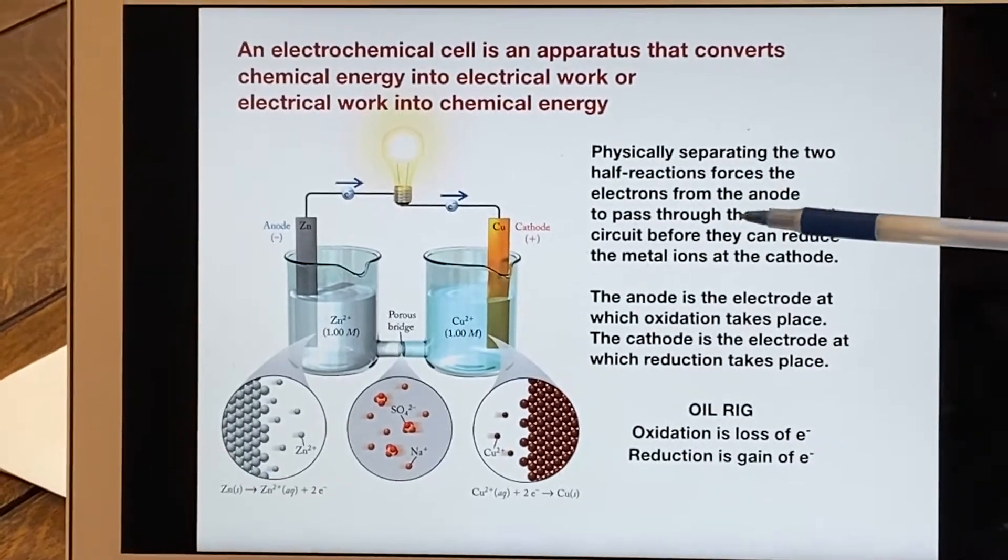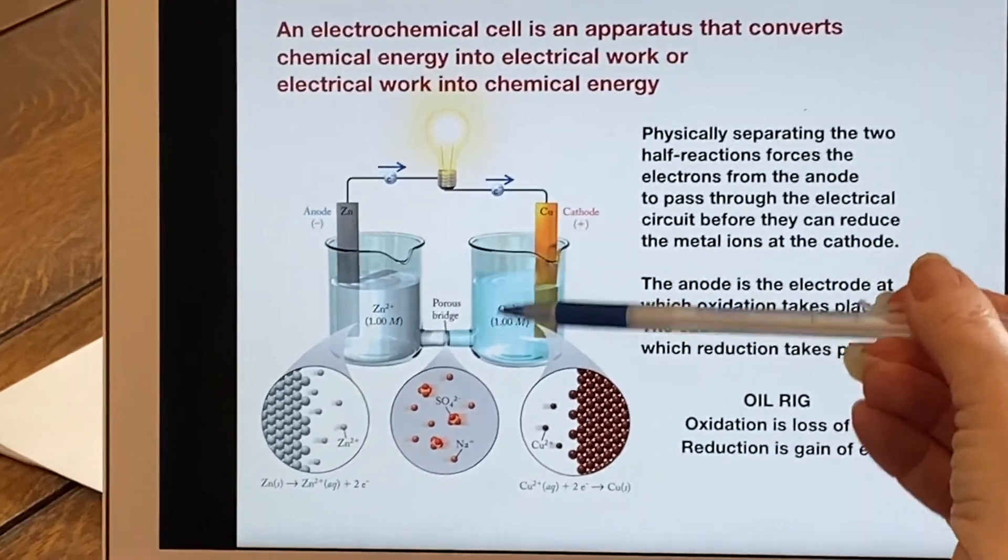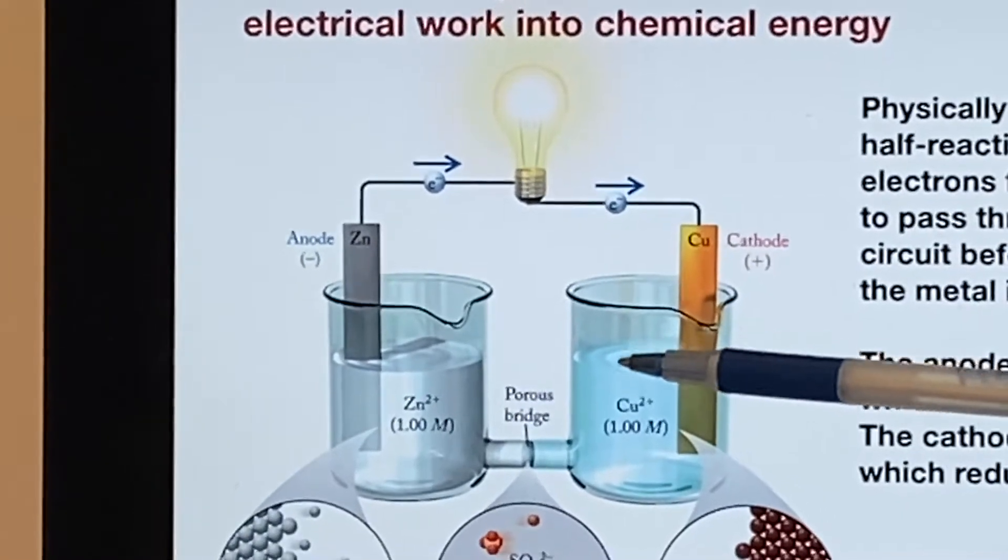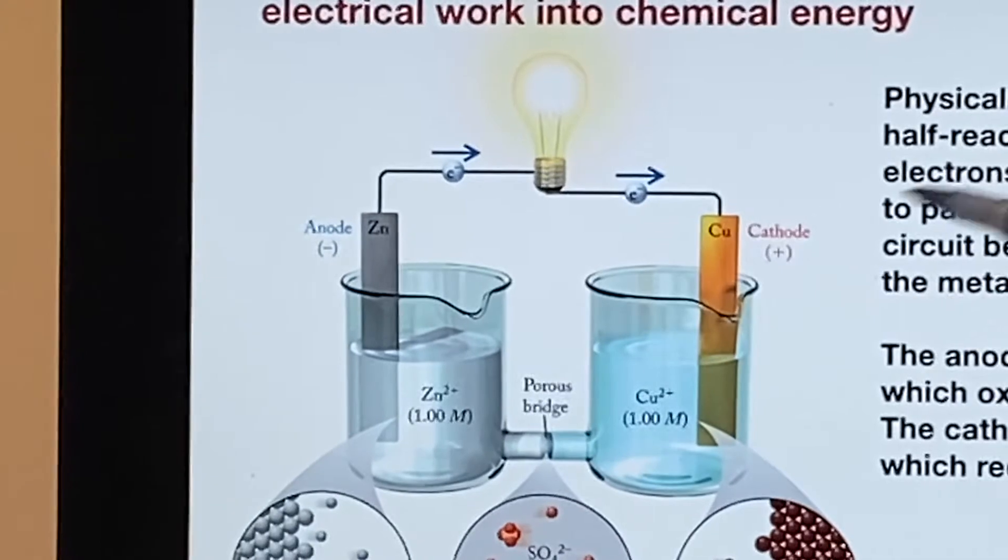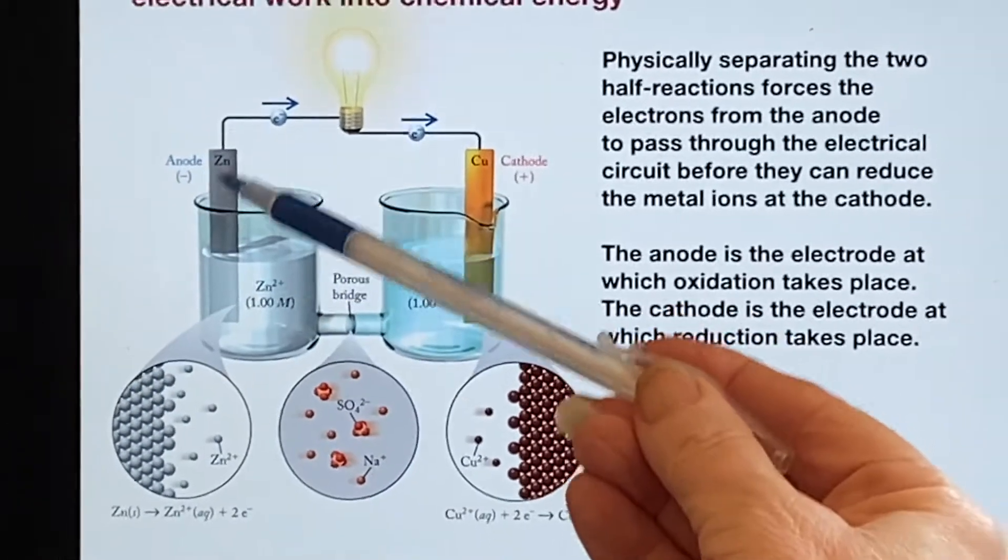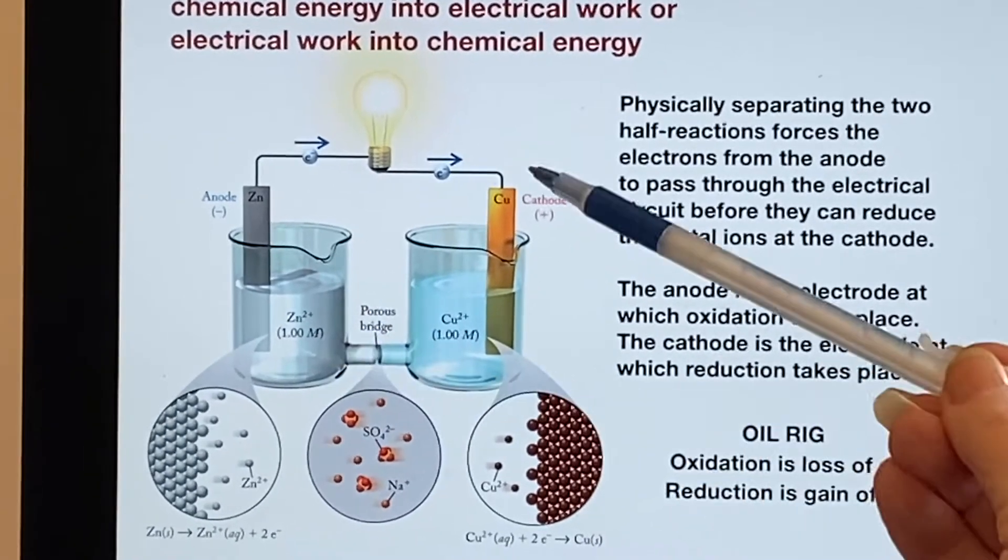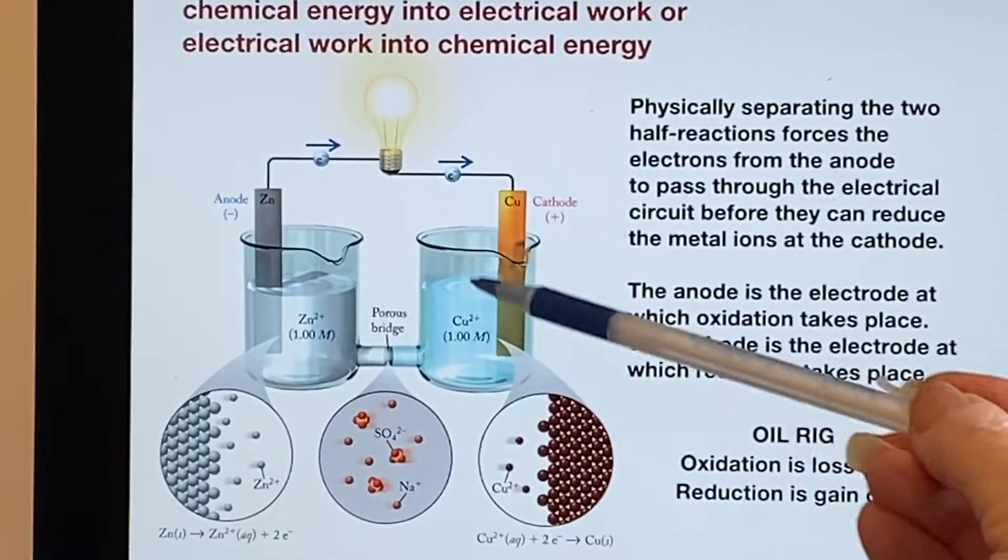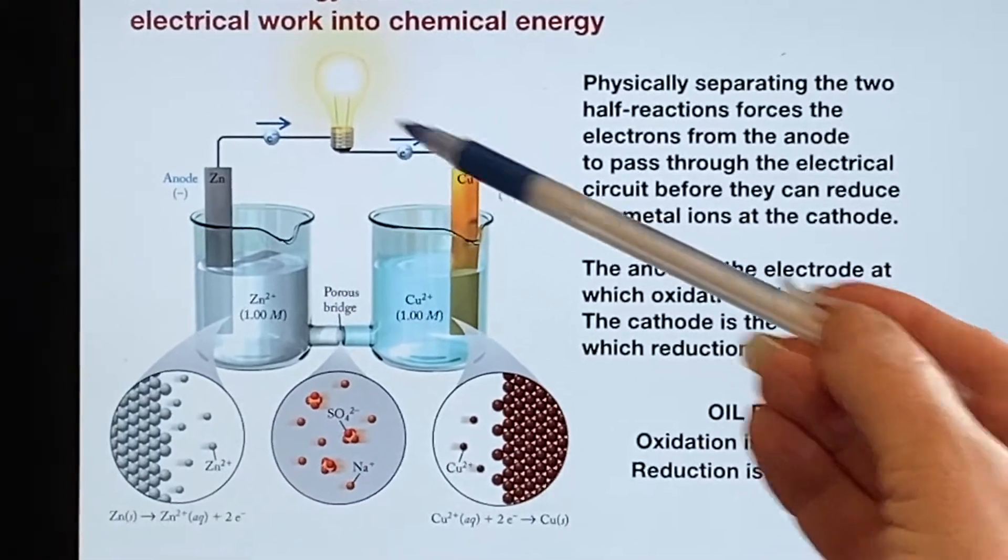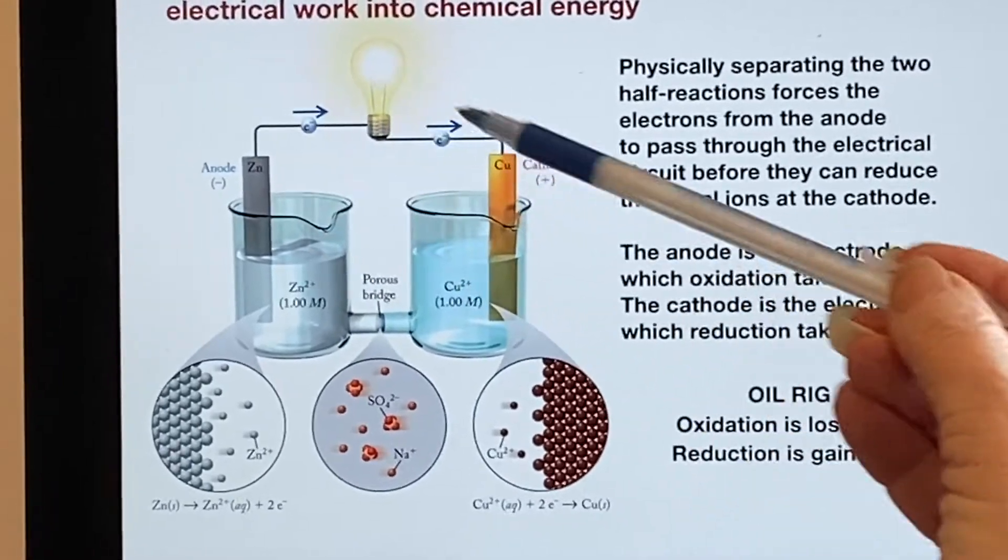If we take our reaction from before where we had put the strip of zinc into copper sulfate and we watched how the copper plated out onto the zinc, what we want to do to make a cell is to physically separate the two half reactions. The way that we end up doing this is putting zinc in a zinc-based solution and the copper in a copper-based solution. We separate them and force the electrons to go through the circuit where they can do actual useful work before they're allowed to finish what they were trying to do.